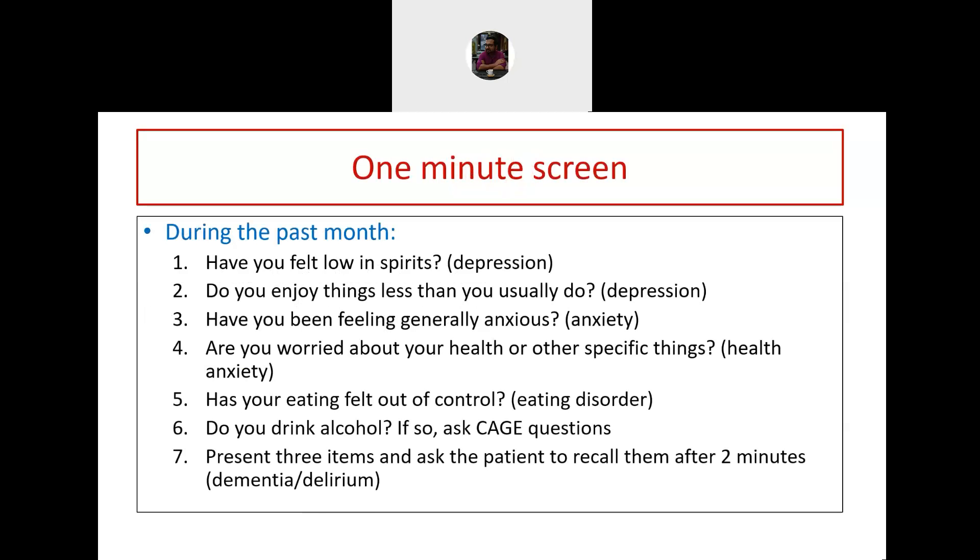At the end you can actually ask leading questions to rule out other possibilities. This is a one minute screen of psychiatric condition. Ask these seven questions: Have you ever felt low in spirits? Screening for depression. Do you enjoy things less than you usually do? Screening for depression. Have you ever been feeling generally anxious? Screen for generalized anxiety. Are you worried about your health or other specific things? This is health anxiety, can even be hypochondriasis. Has your eating felt out of control? You are thinking of eating disorders. Do you drink alcohol? If so ask about the cage questions, ruling out alcoholism. And present three items and ask the patient to recall them after two minutes, a test for dementia or delirium. These should be done at the end of the interview because if you do it in the beginning patient will be biased.